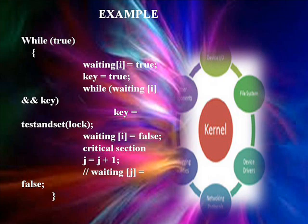Example: while(true) { waiting[i] = true; key = true; while(waiting[i] && key) key = TestAndSet(lock); waiting[i] = false; // critical section j = (j + 1); waiting[j] = false; }